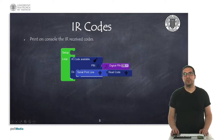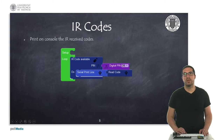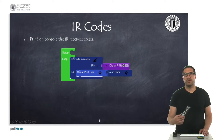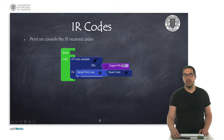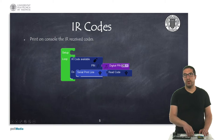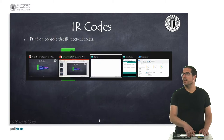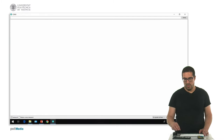In this first example, I'm going to show you how to read infrared codes whenever we press any button on this infrared controller. I have already uploaded the code onto the board, so let's see on the Arduino console...